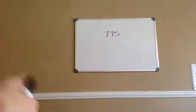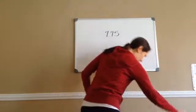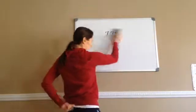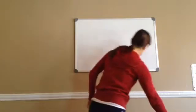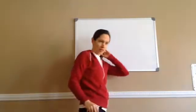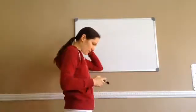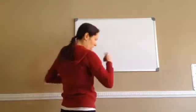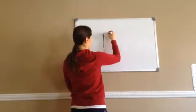All right, 7th grade, Lesson 75. This is on area of a complex figure and then also area of a trapezoid. So this is what a complex figure is going to look like.